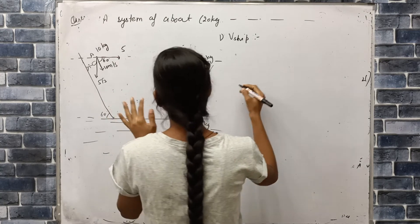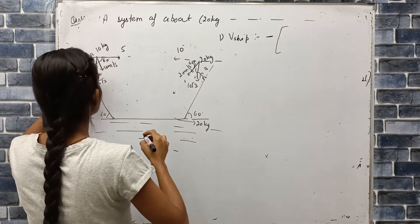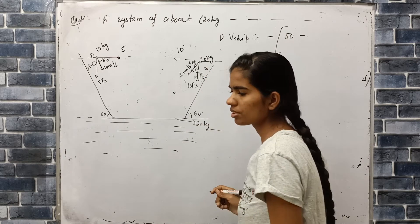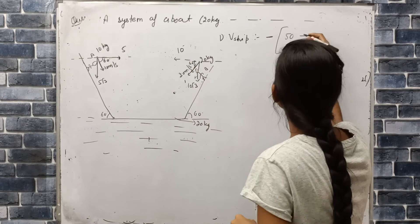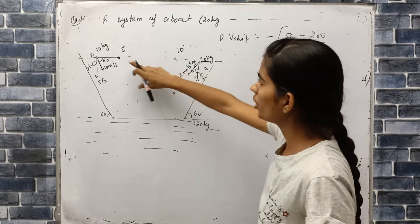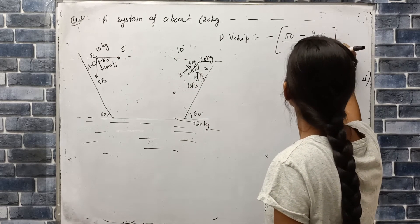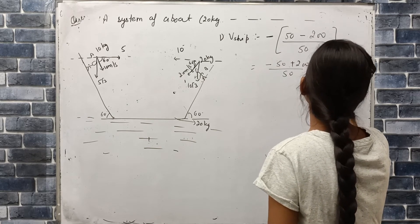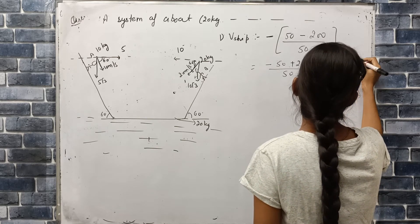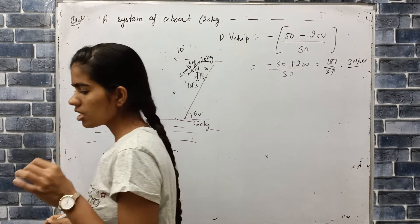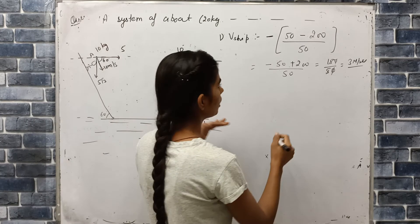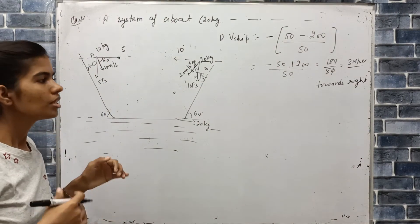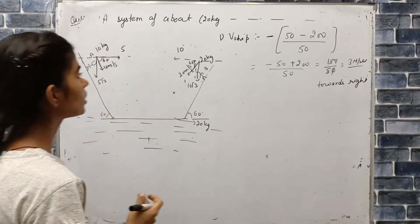When we start with this case, applying momentum conservation: minus sign, m1·u1 = 10 kg × 5 = 50, minus 20 × 10 = 200, divided by total mass which is 10 + 20 + 20 = 50. So velocity of ship = (-50 + 200) / 50 = 150 / 50 = 3 meters per second toward the right.